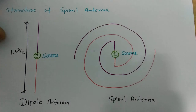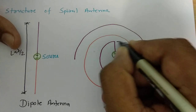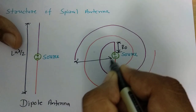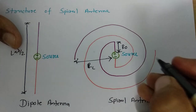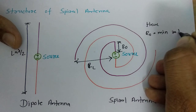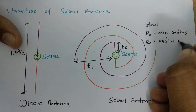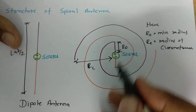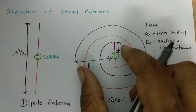This is the spiral antenna structure. There are two key parameters to focus on: the minimum radius R0 and the circumference radius Rc. These two parameters are very important for designing the spiral antenna.